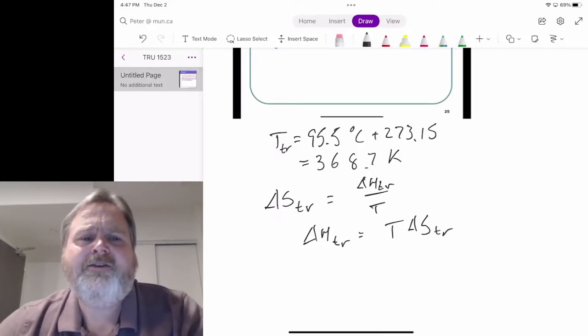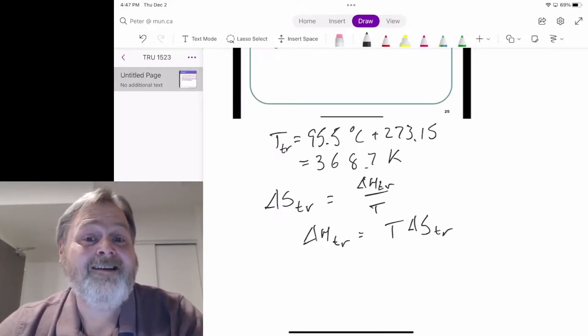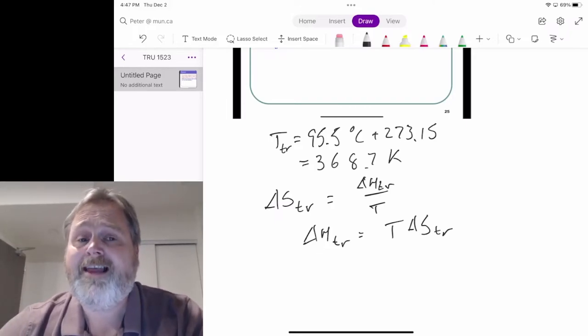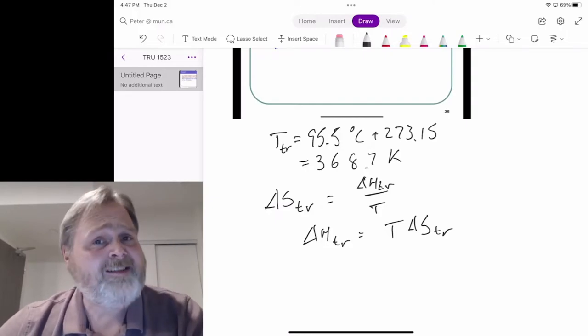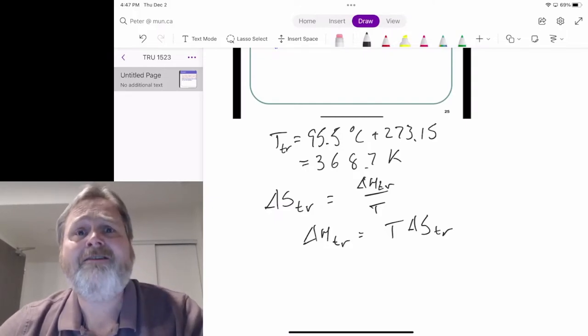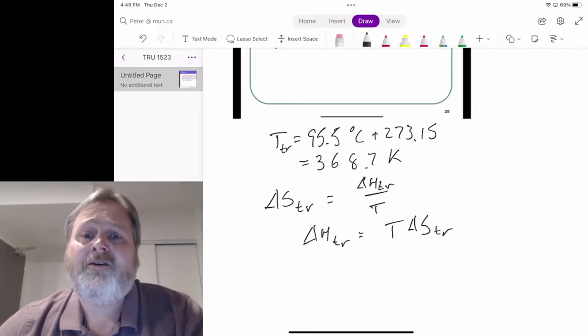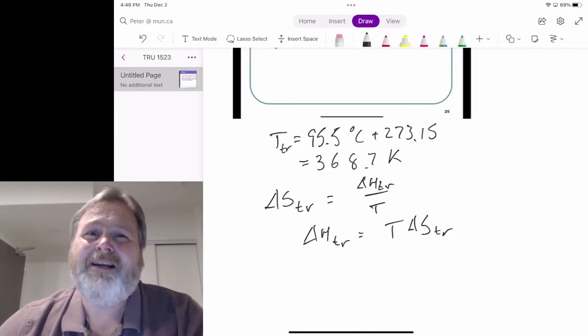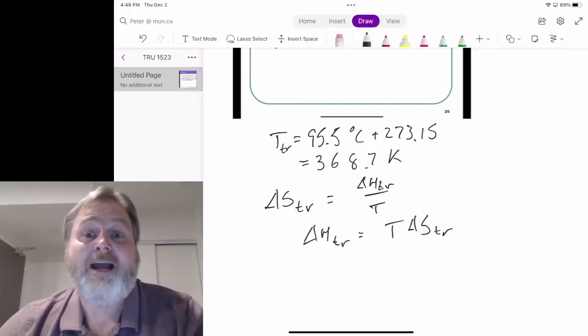I'm going to ask you to kind of remember T delta S is connected to delta H for a reversible change. Because we're going to see that a bit later on when we start talking about Gibbs energy. So this is a good reason why I emphasize some pretty simple calculations up until this point. Because there is a method to my madness.